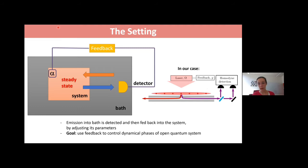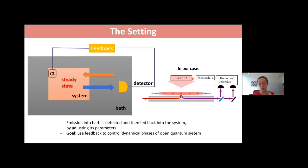More specifically, I'll be talking about a nanofiber waveguide with many atoms nearby. The atoms emit photons into the waveguide, which can be detected. I'll explain how one can do homodyne detection, take this signal as feedback, and then change the laser exciting these atoms — and get something useful out of it.